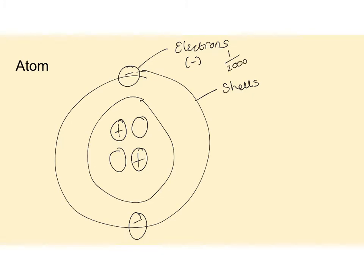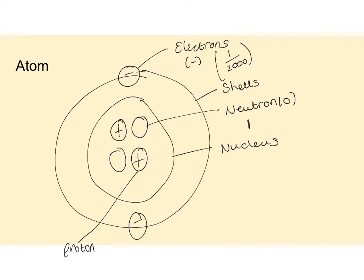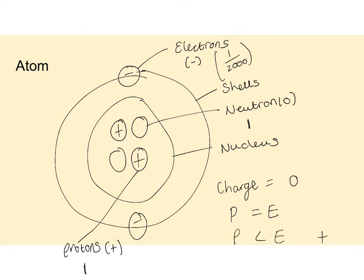Electrons have got a mass of about one over two thousand - sometimes you say negligible. Then you've got your neutrons, which are neutral; they've got a mass of one and they are in the nucleus. Then you've got your protons - they've got a positive charge, a mass of one, and they're also found in the nucleus. The overall charge of an atom equals zero because you've got the same number of protons and electrons. If you have more protons than electrons it becomes a positive ion, and if you have fewer protons than electrons it becomes a negative ion.